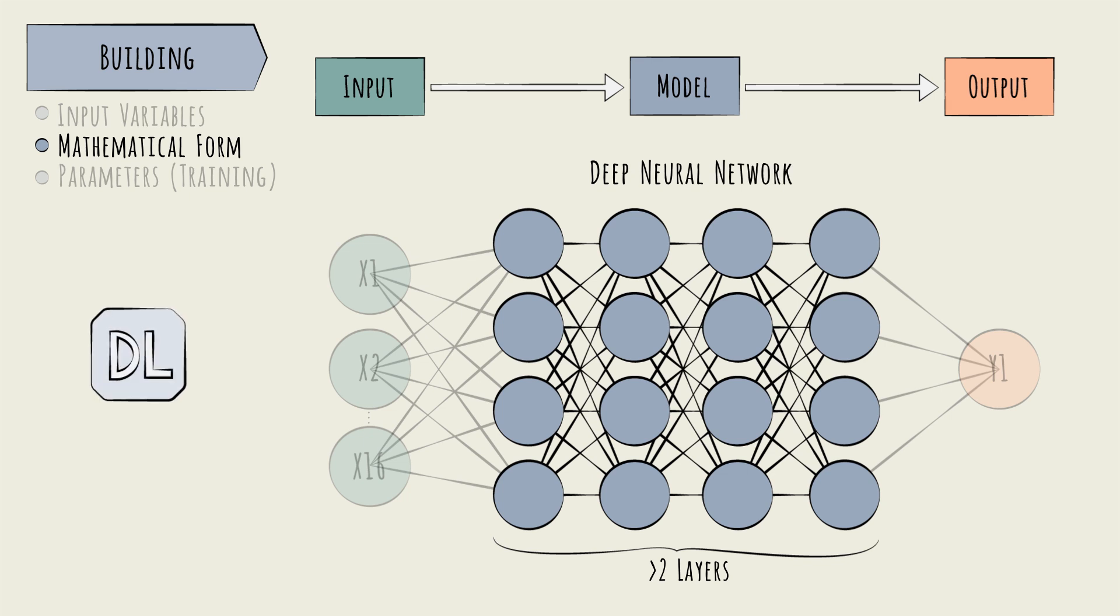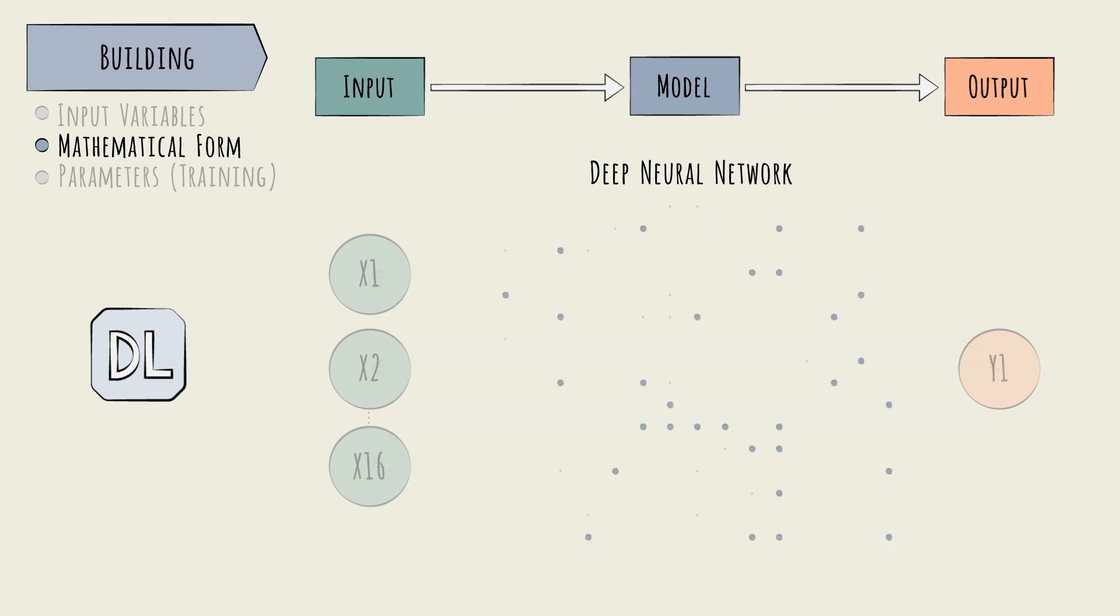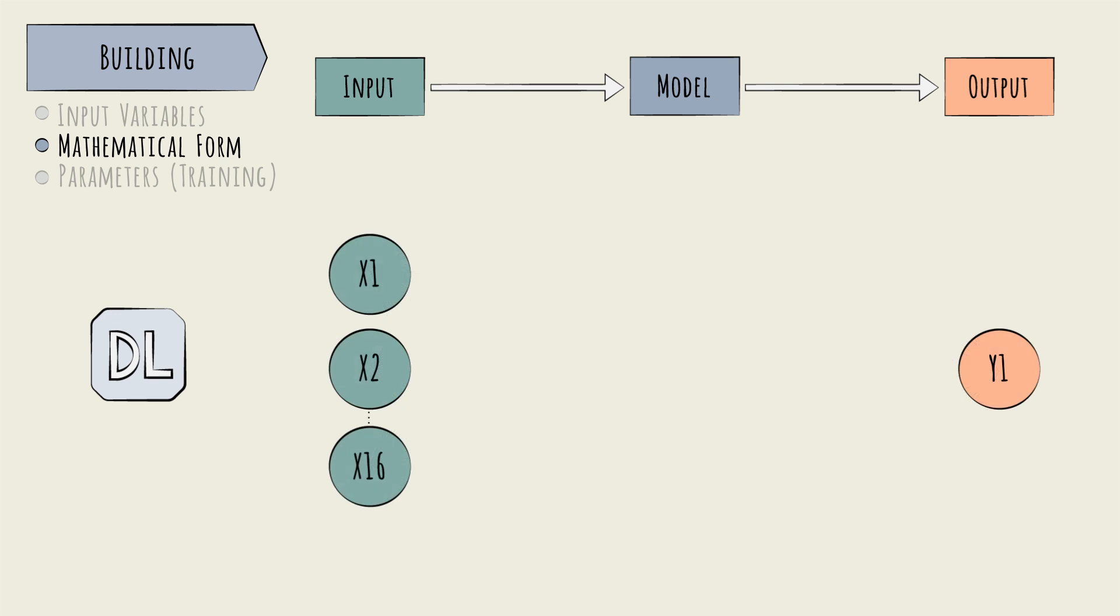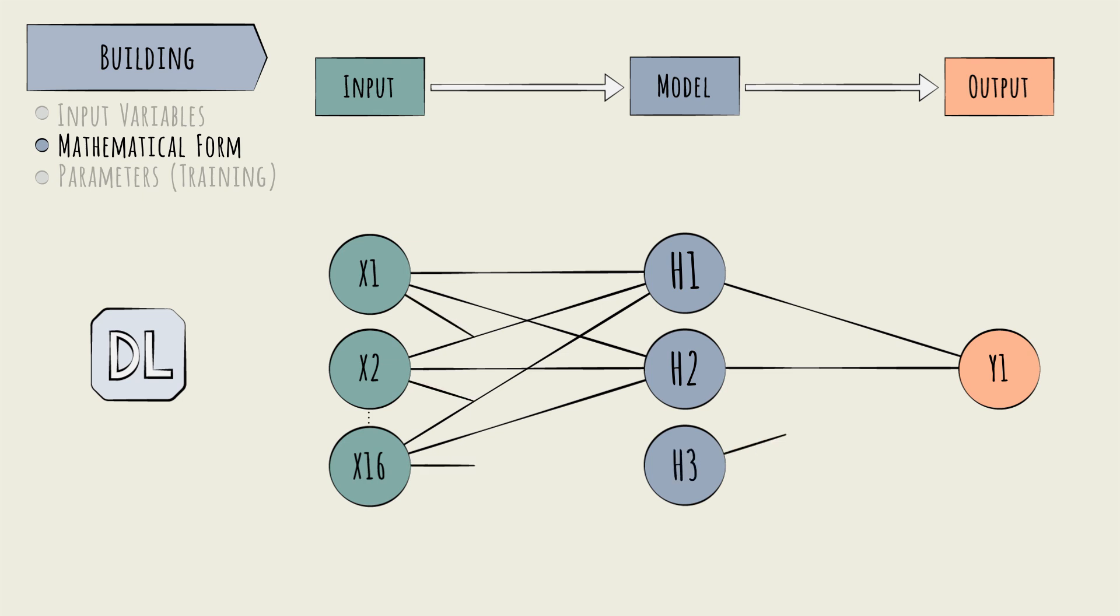Real world deep learning neural networks often contain dozens of these layers, with hundreds of neurons on each. Let's keep it simple and just add one hidden layer with three neurons, h1, h2, and h3.